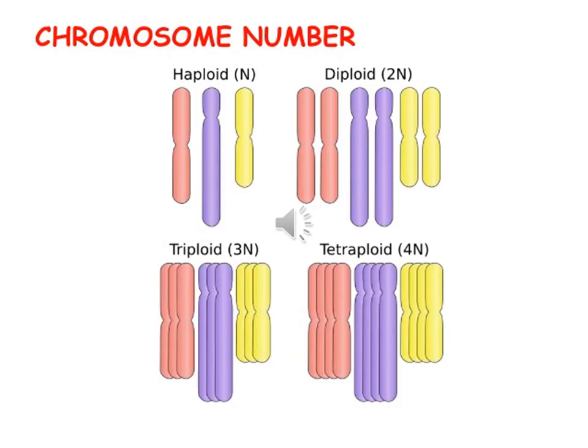When we have one set of chromosomes, the cell is haploid, like sex cells. In somatic cells, we have two sets of chromosomes, so they are diploid. When one or two extra sets of chromosomes are present, we call them triploid and tetraploid, which are lethal conditions.